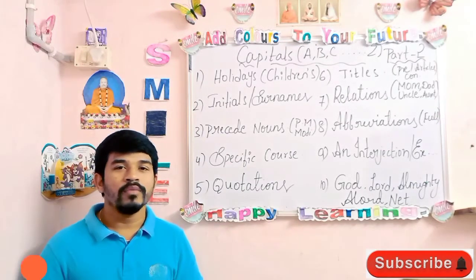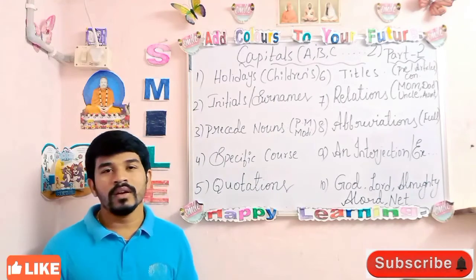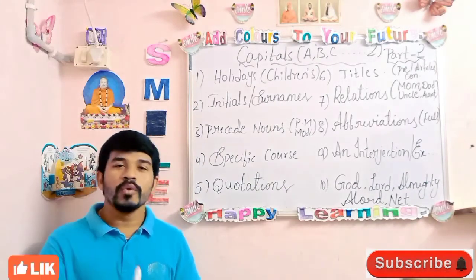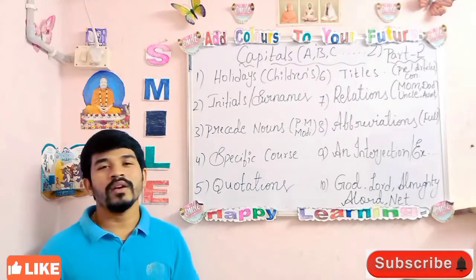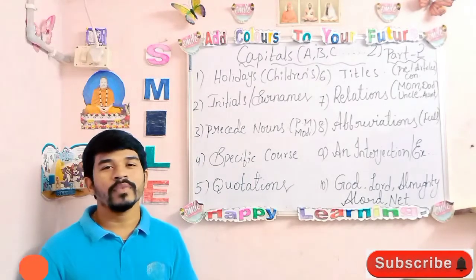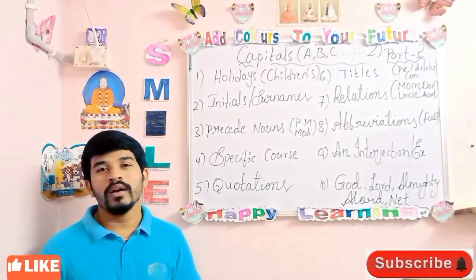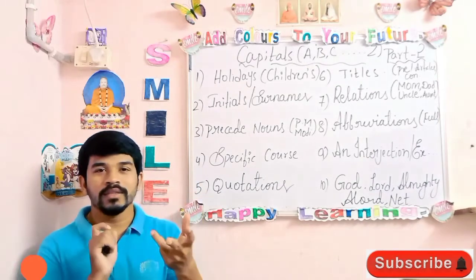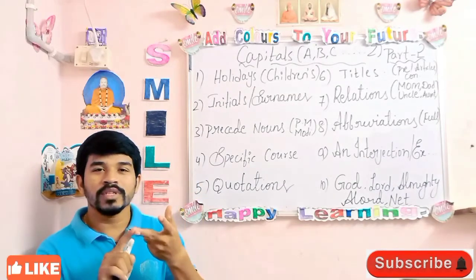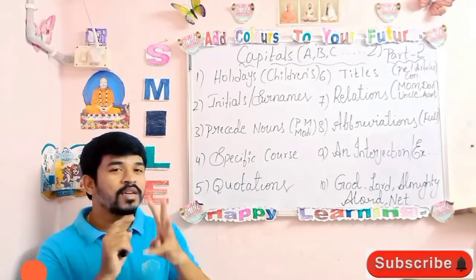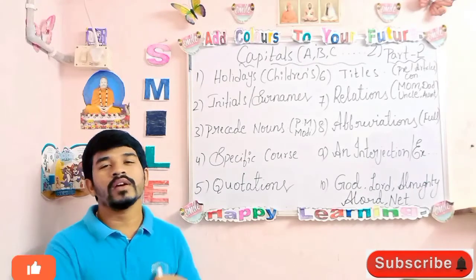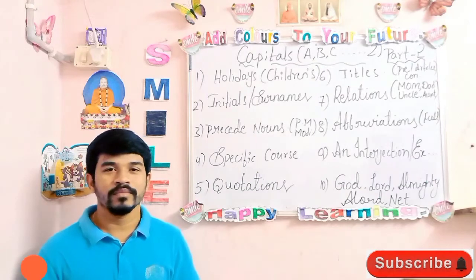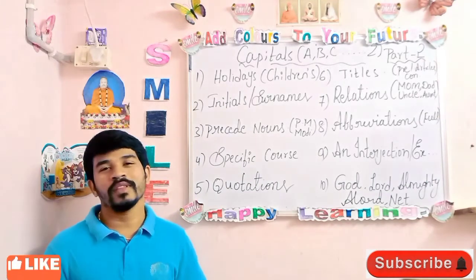When writing titles, the first letter must compulsorily be in capital for each word — except for articles, prepositions, and conjunctions. Those three types of words, when they appear in a title, should not be written with capital letters. Remaining words in the title — each word must be written with its first letter in capital. I hope it is clear to you.